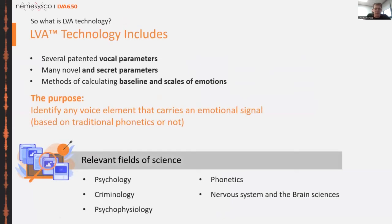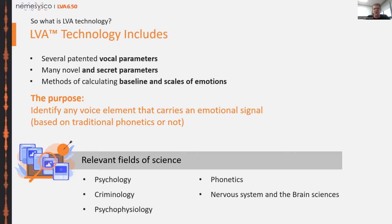I didn't say once 'understand the lies,' because LVA gives us a much broader view about how a person feels — which will eventually lead to revealing the truth, but gives us so much more than that. LVA technology is a set of patented vocal parameters exposed in patents, along with many secret parameters and methods of calculating baselines and scales of emotions, which in a way substitutes the need for control questions in our activities.